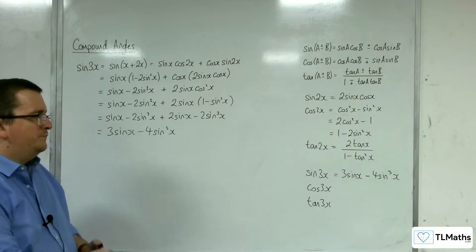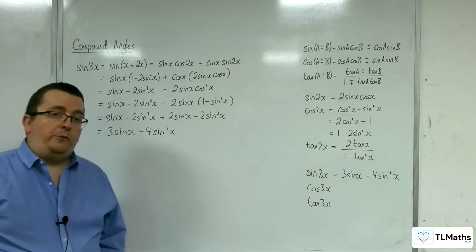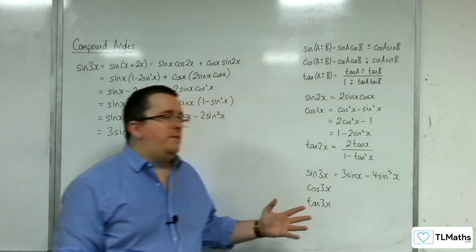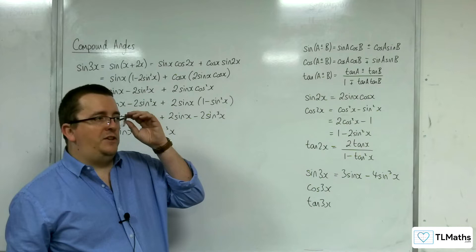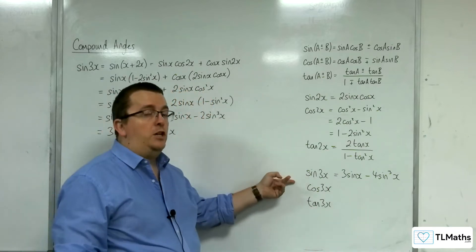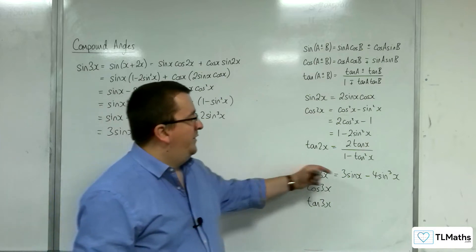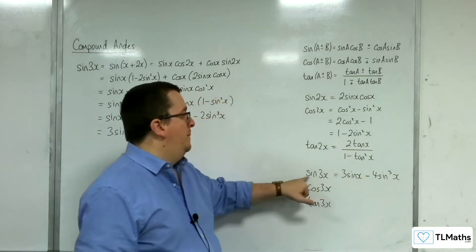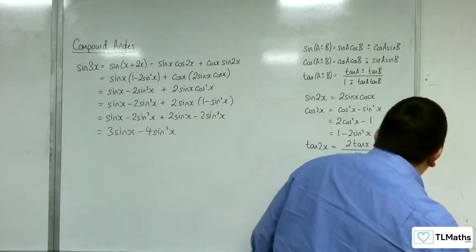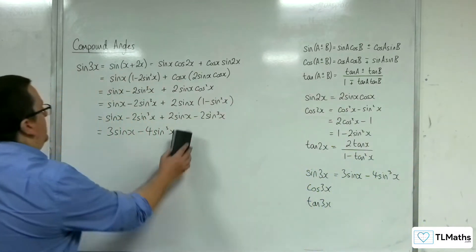OK. So what good would this be? What could you use it for? Well, just as we've used the double angle formula to integrate sine squared, you could use this to integrate sine cubed. So if you wanted to integrate sine cubed, rearrange this formula, and then you've got something quite easy to integrate. So that's sine of 3x.